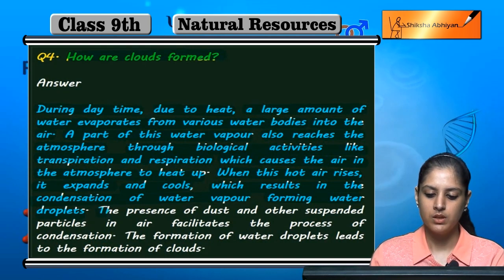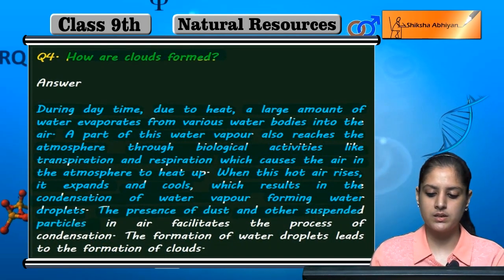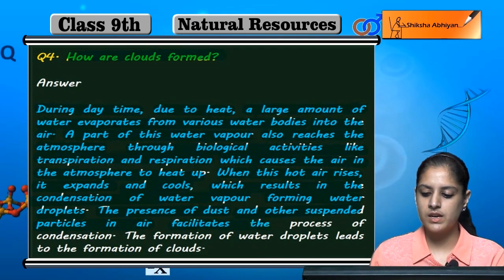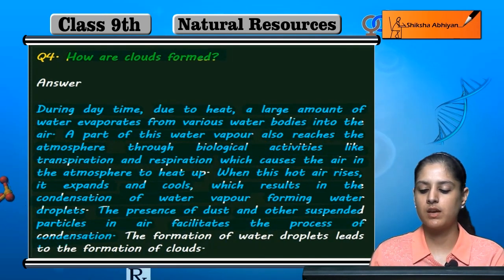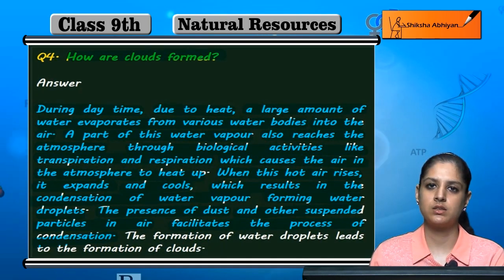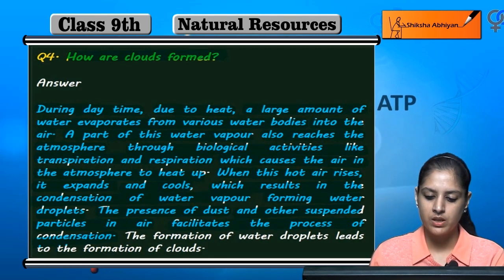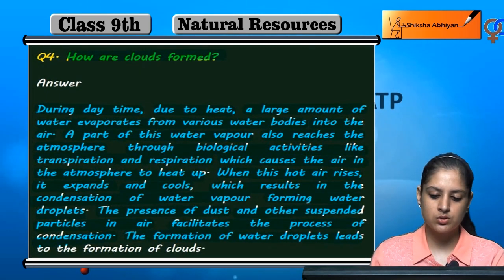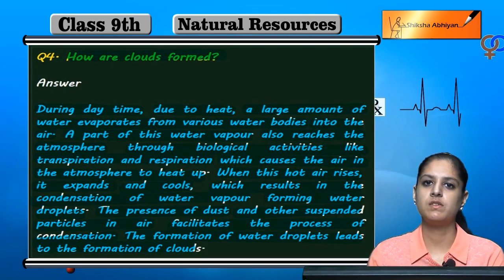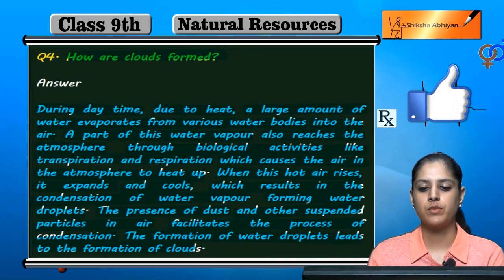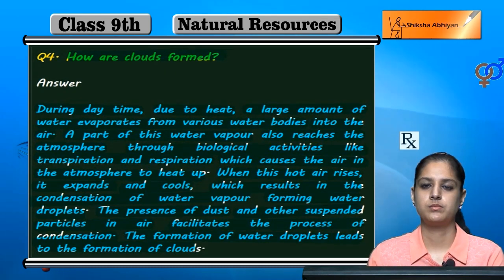The presence of dust and other suspended particles in the air facilitates the process of condensation. These dust and other particles in the air make this process happen even faster. The formation of water droplets leads to the formation of clouds. This is how cloud formation takes place in the atmosphere.